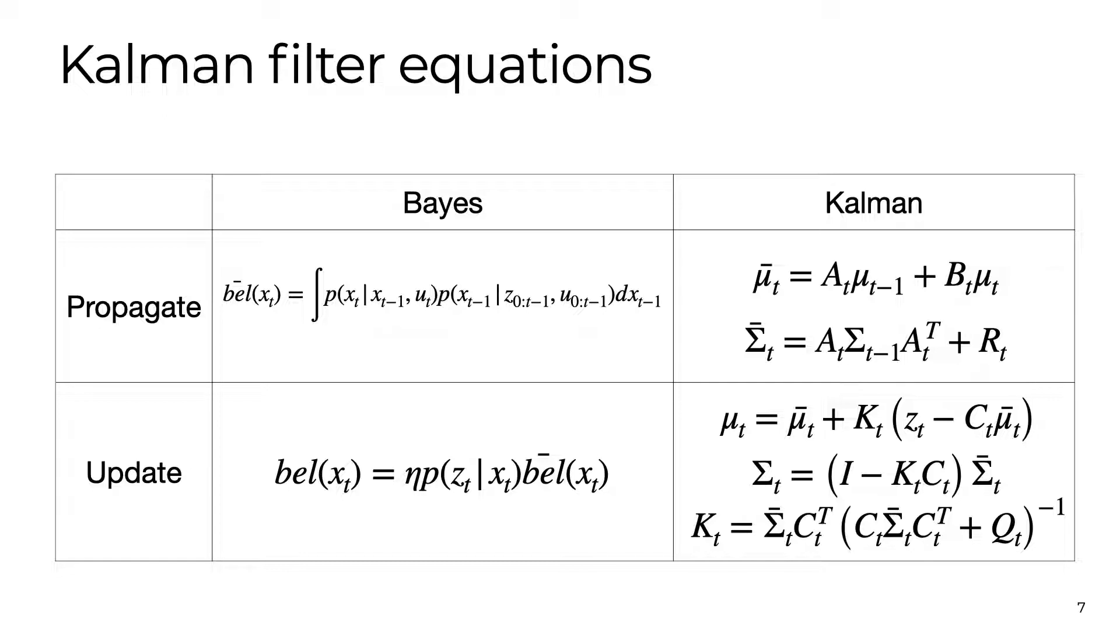In this setting, we can show that the Bayes filter equations can be reduced to simple linear algebra operations. Here we show the equations and refer the interested student to the supplementary material for a full derivation. Let's look at the first row for prediction. The Kalman filter propagates the mean through the noiseless linear process model and updates the associated covariance matrix.